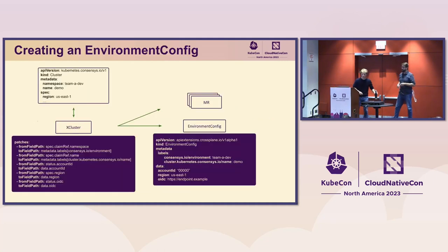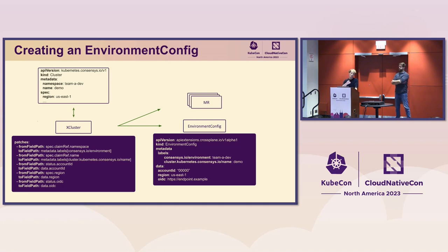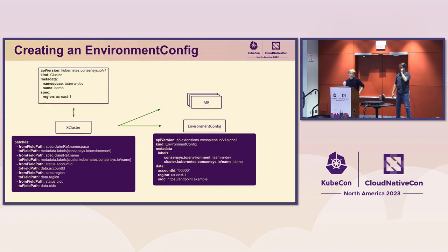Now let's look at how we build the reference system. As part of our composition, we create both the managed resources — for example, the EKS cluster resources for our cluster automation — and also an environment config. The patch and claim resources basically copy some of the fields there.